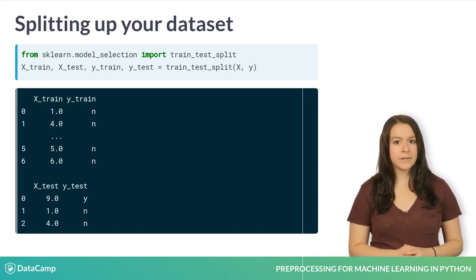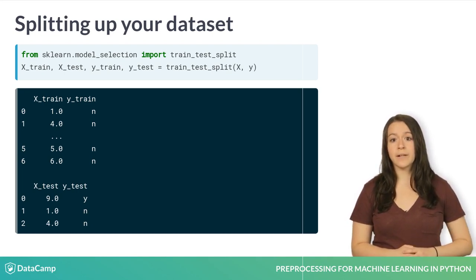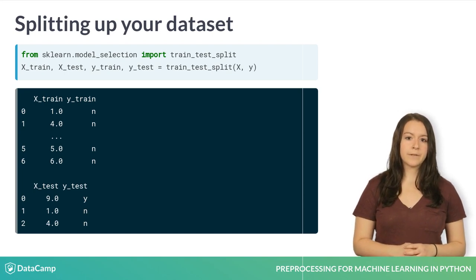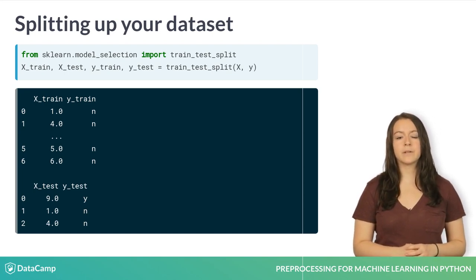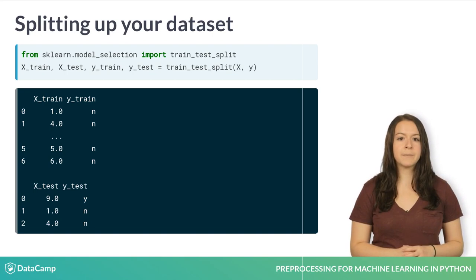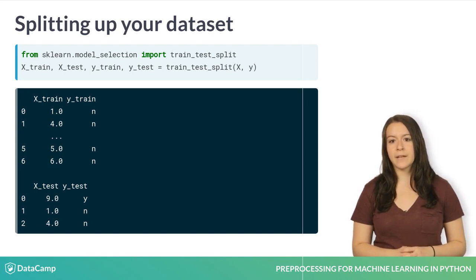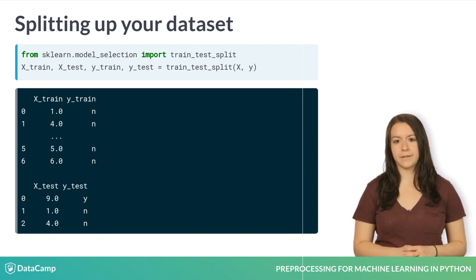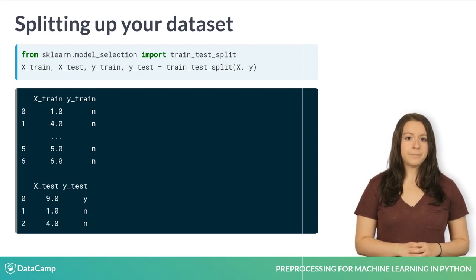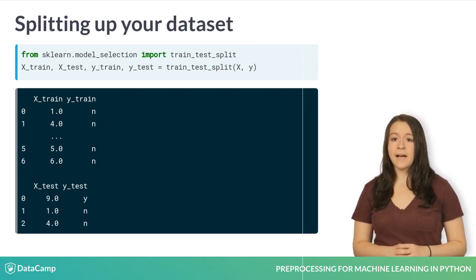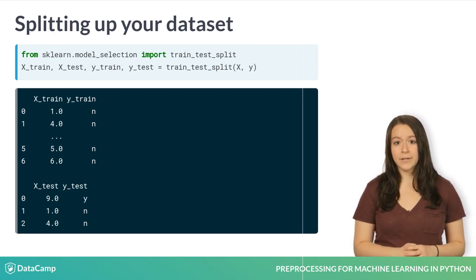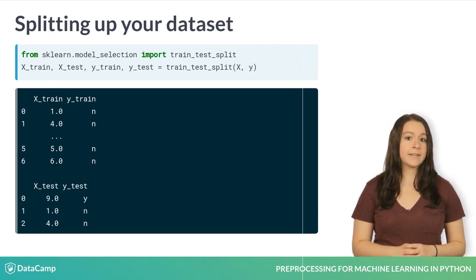In many scenarios, default splitting parameters will work well. However, if your labels have an uneven distribution, your test and training sets might not be representative samples of your data set and could bias the model you're trying to train. For example, if you look at the example training and test data sets on this slide, you can see that the training set has only samples labeled N, while there is a Y label in the test set.